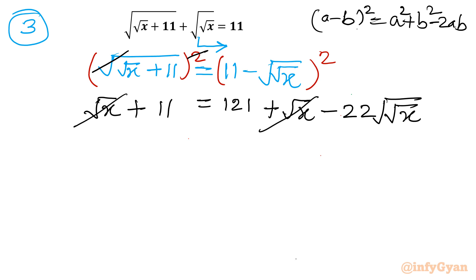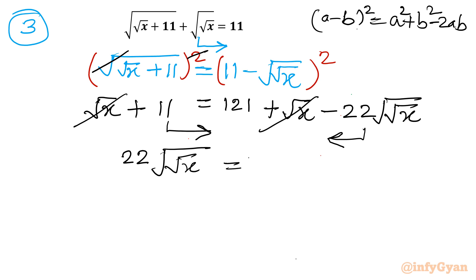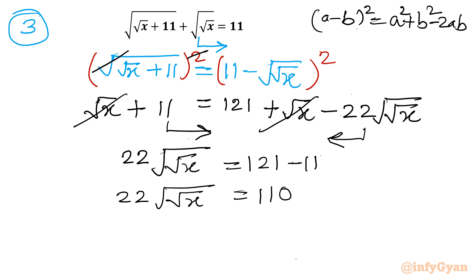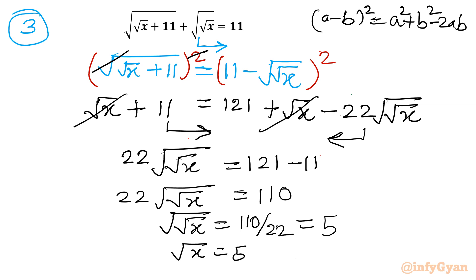After cancelling matching terms and rearranging, the equation becomes 22 times square root of (square root x) equals 110. Dividing both sides by 22 gives square root of (square root x) equals 5. Squaring both sides twice: square root of x equals 25, and then x equals 5 to the power 4, which equals 625.